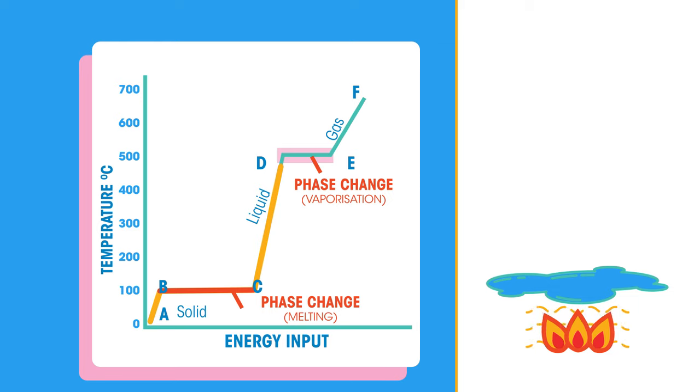At the vaporisation point, the plastic would stop increasing in temperature whilst it transitioned to gaseous plastic. Once in the gas state, if we were to continue heating further, the gaseous plastic would, you've guessed it, rise in temperature.